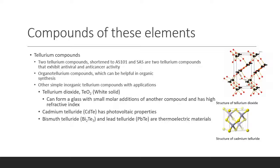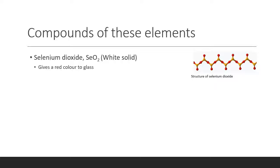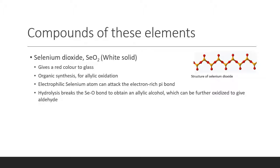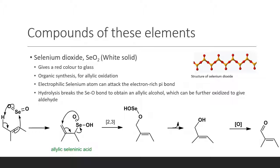Tellurium forms compounds such as AS-101 and SAS, which are antiviral and anticancerous. Tellurium dioxide is also a white solid that can be added to glass and has a high refractive index. Selenium dioxide can similarly be added to glass but gives it a red color. It can also be used in organic synthesis as a catalyst for allylic oxidation. As shown by this mechanism, the electrophilic selenium atom can attack the electron-rich pi bond. Subsequently, hydrolysis can break the selenium-oxygen bond to obtain an allylic alcohol, which can be further oxidized by potassium permanganate to give an aldehyde.